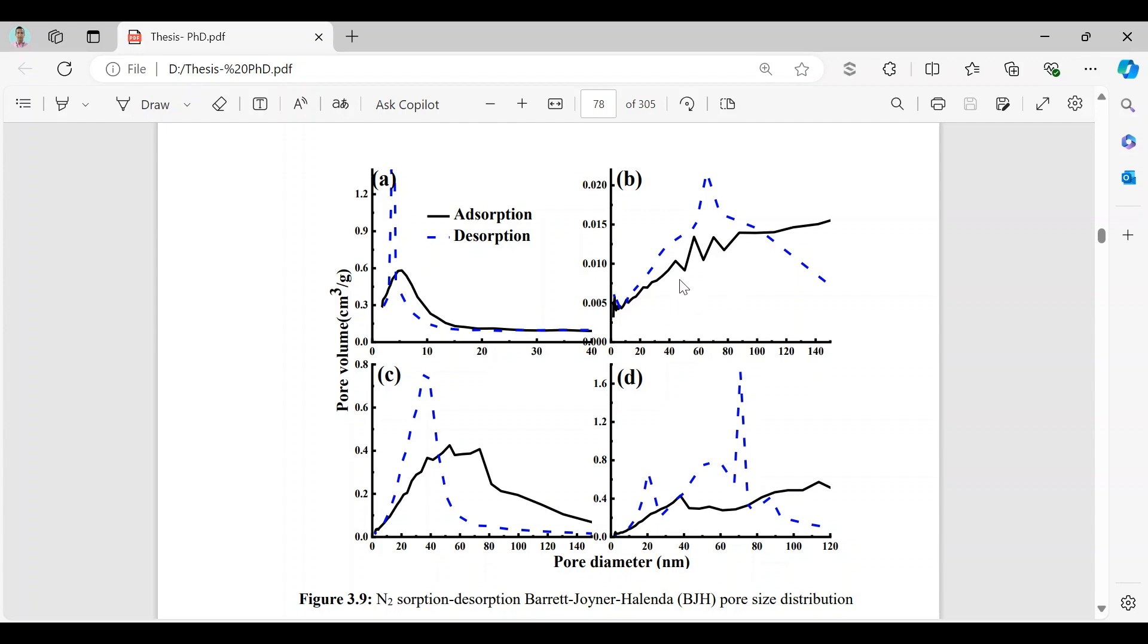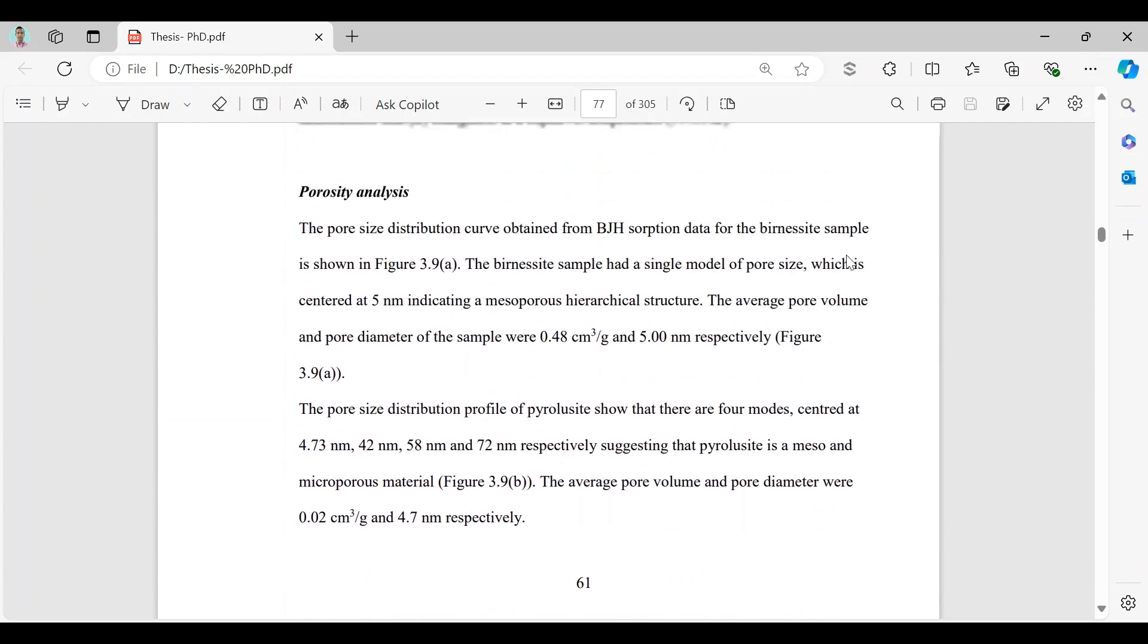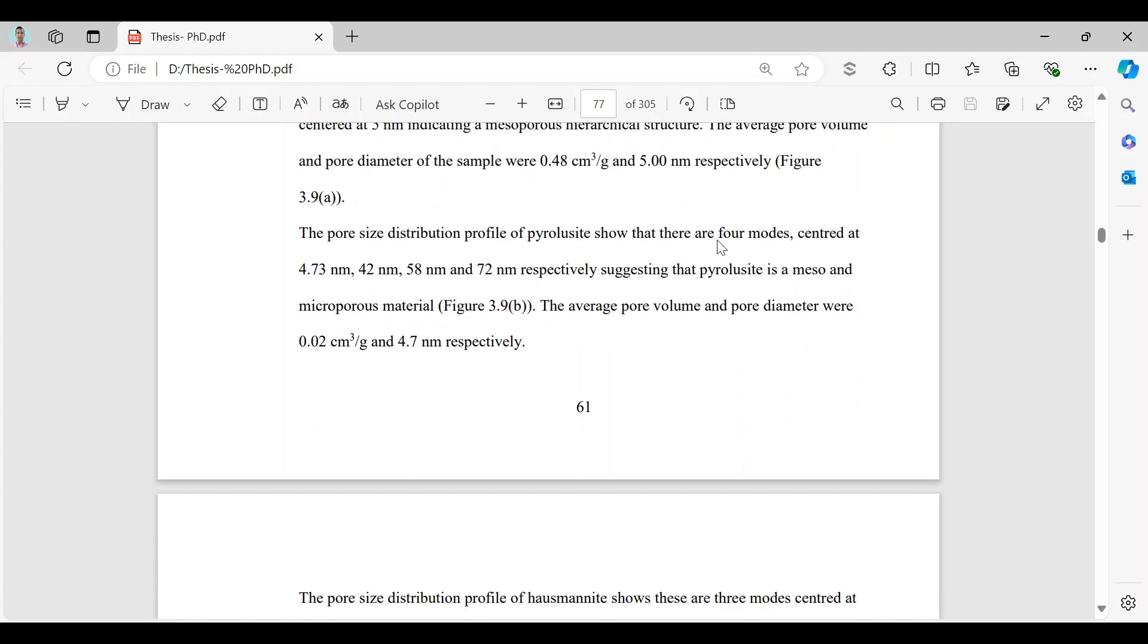And these four peaks are for four modes centered at 4.73 nanometers, 42 nanometers, 58 nanometers, and 72 nanometers respectively. That means pyrocite is a meso and microporous material. This material contains some particles which are mesoporous and some particles which are microporous.